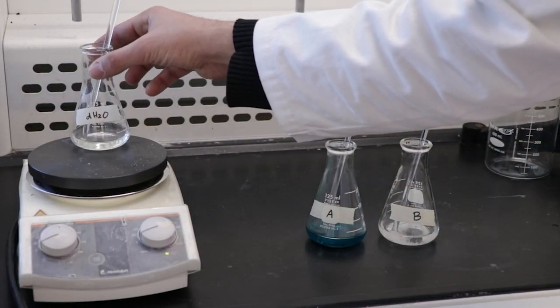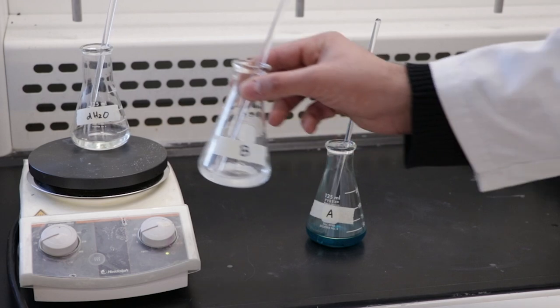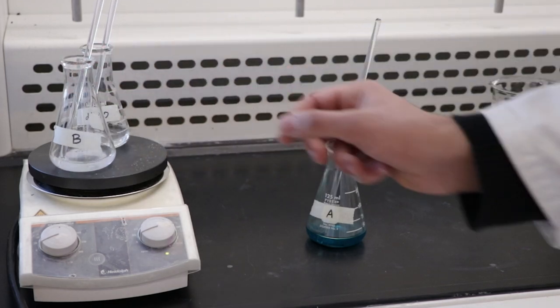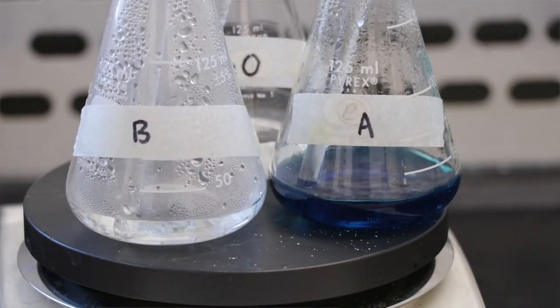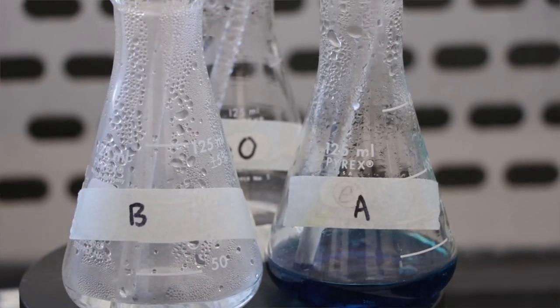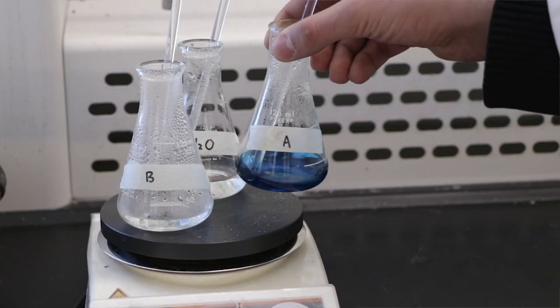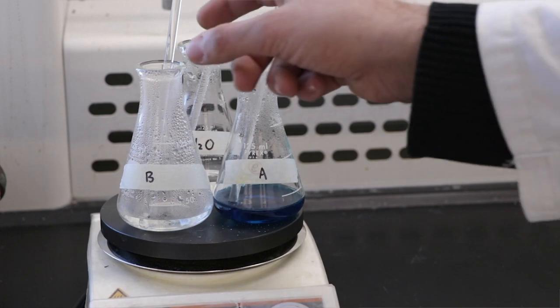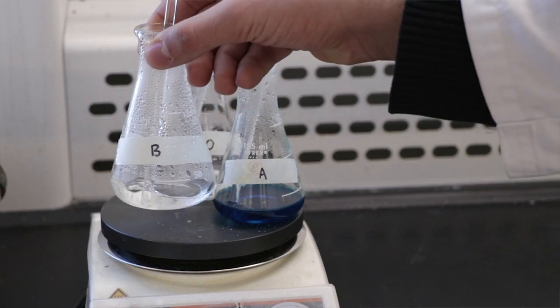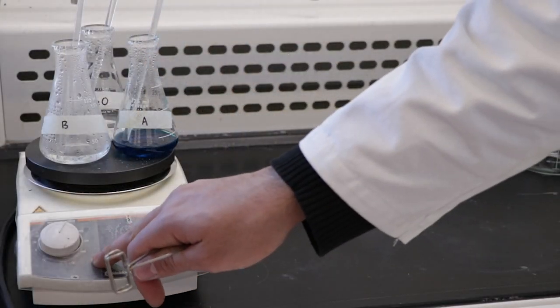Place all three flasks on a hot plate and begin heating the solutions. Bring the solutions to a gentle simmer. Stir the solutions in flasks A and B occasionally to ensure that all the solids dissolve.